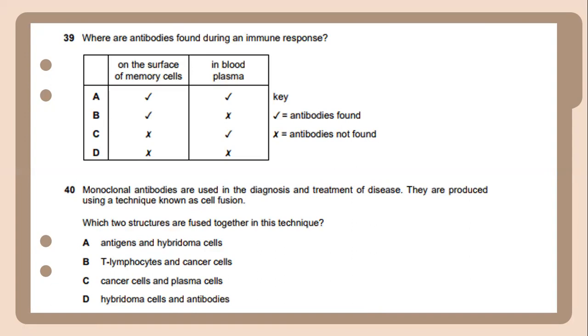Thirty-nine. Where are antibodies found in an immune response? The correct answer will be on the surface of memory cells, and the antibodies can also be found in blood plasma.